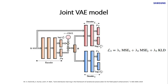We cannot map features from one domain to another domain using a conventional VAE, because the input of the encoder and the output of the decoder must be the same, as can be deduced from its ELBO equation. This is handled in joint VAE by learning a joint distribution of SI features and FMLLR-normalized features in a common latent space.